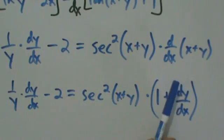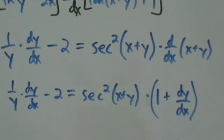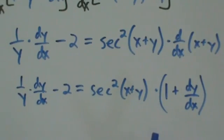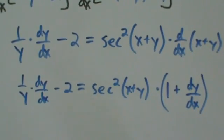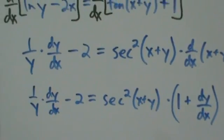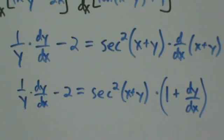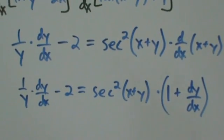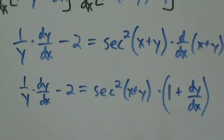It's secant squared of x plus y times the derivative of all this stuff, so the whole thing in parentheses is the derivative of x plus y. We want to be very careful about that. Stuff like this could drastically change the answer you get. Always be careful with your parentheses. It is pretty easy to forget, especially for something like this. But just be careful, practice lots and lots, and you'll be good.